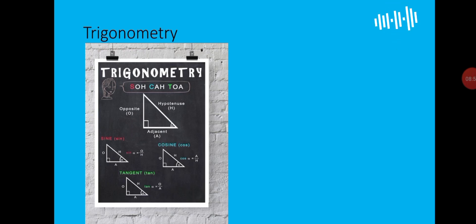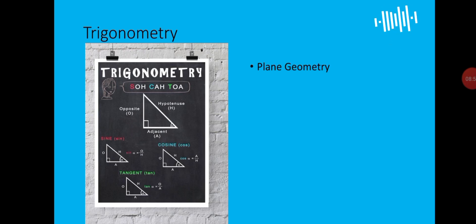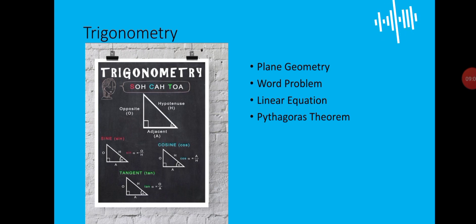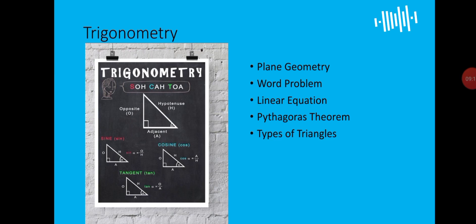Then trigonometry — a topic that was previously introduced in senior high school but is now in the junior high school, so you need to know it now. SOHCAHTOA is just some rules you need. You also need your word problem and knowledge of linear equations. Then Pythagoras theorem — trigonometry is more like a continuation of what you know in Pythagoras theorem, and it has to do with angles and types of triangles. In junior high school, you'll mostly be dealing with right-angle triangles. Then bearings.